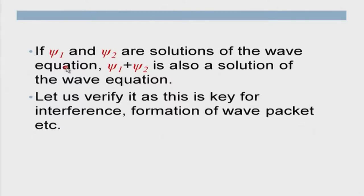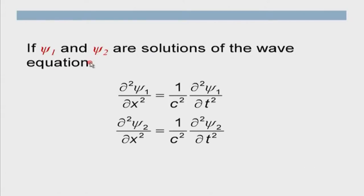Let us first show that this is really true for this wave equation and electromagnetic waves. If psi 1 and psi 2 are solutions of the wave equation, psi 1 plus psi 2 should also be a solution. This is the key to interference and the key to wave packet formation, because a wave packet can form only when I am able to superimpose two or multiple disturbances.